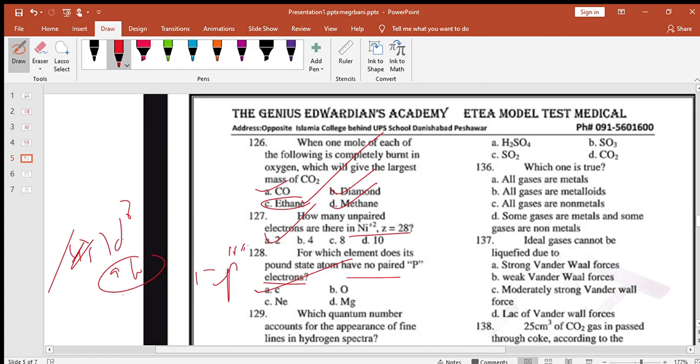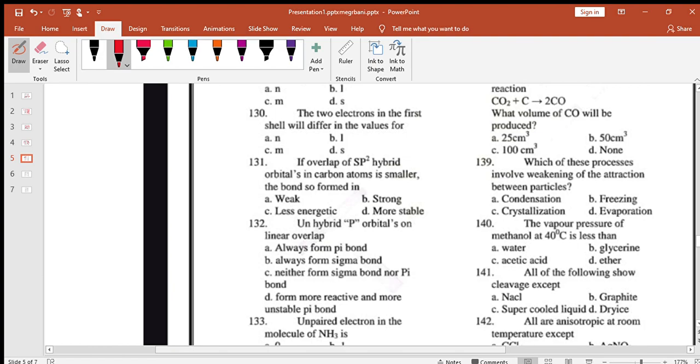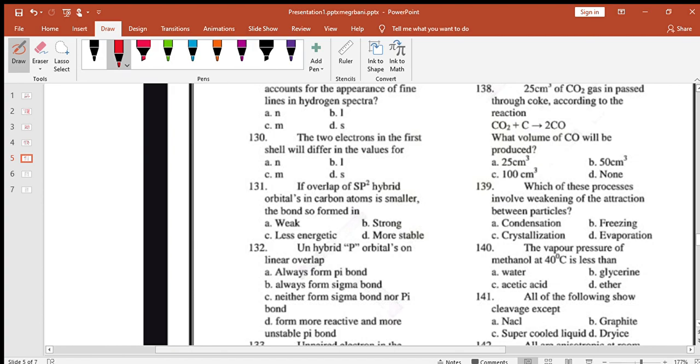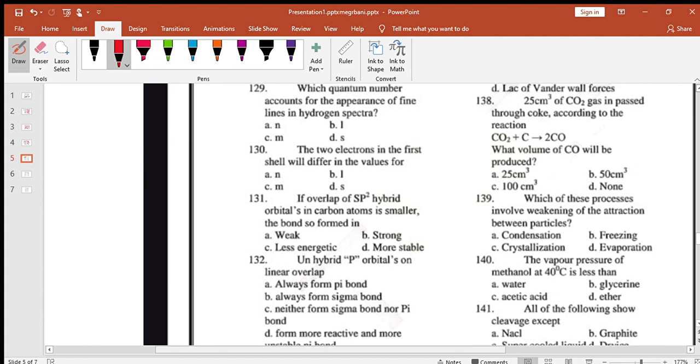Which quantum number accounts for the appearance of fine lines in hydrogen spectrum? That is simple: principal quantum number, option A.